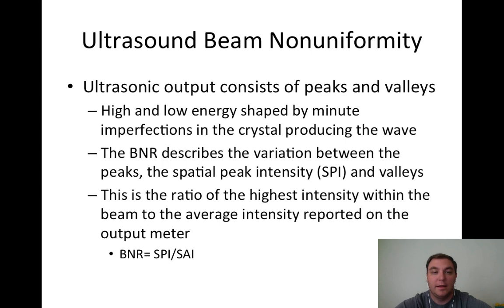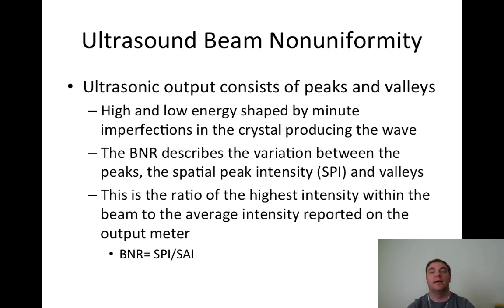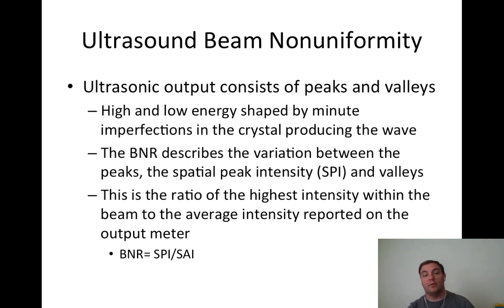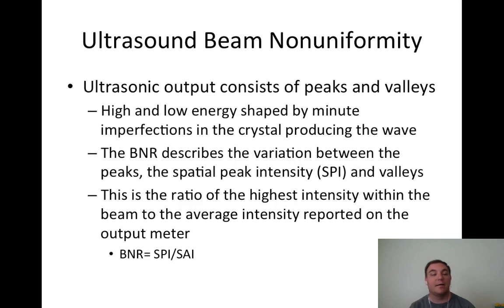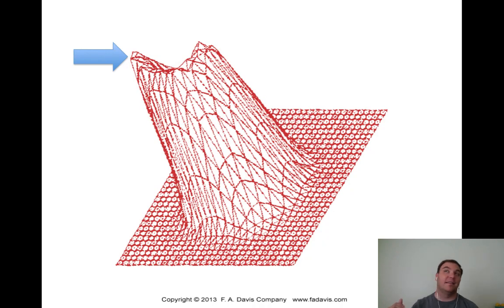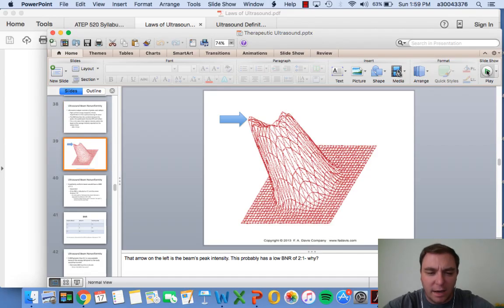Ultrasound beam non-uniformity: BNR. The ultrasound output consists of peaks and valleys - high and low energy shaped by minute imperfections of the crystal. The BNR describes the variation between the peaks and valleys, and is the ratio of the highest intensity within the beam to the average intensity on the output meter. BNR equals spatial peak intensity divided by SAI. A high BNR ratio can actually cause tissue damage and burns.